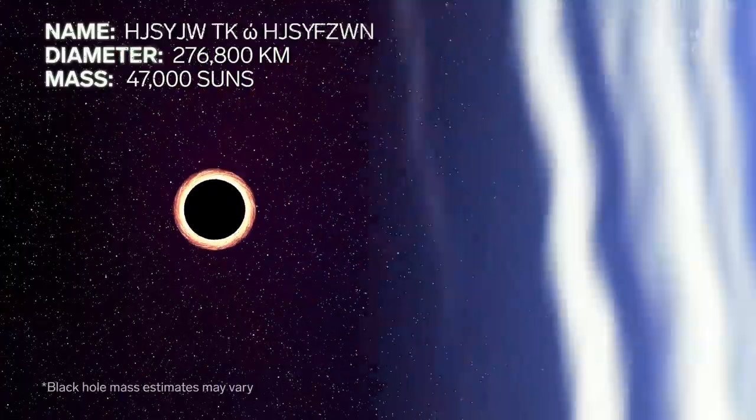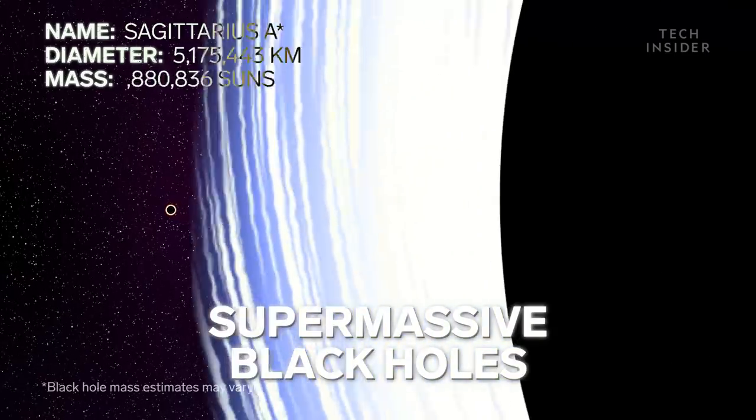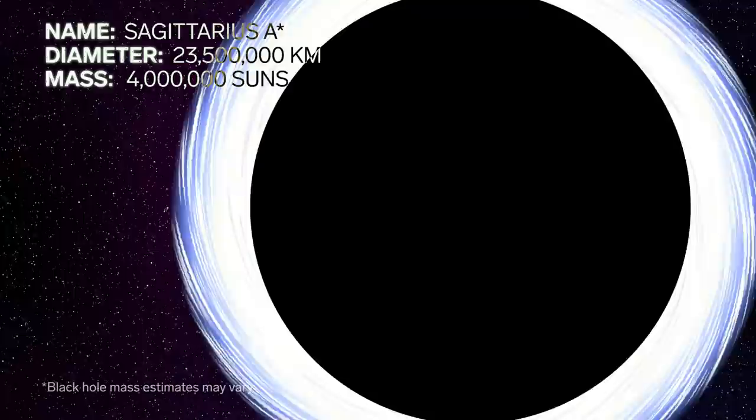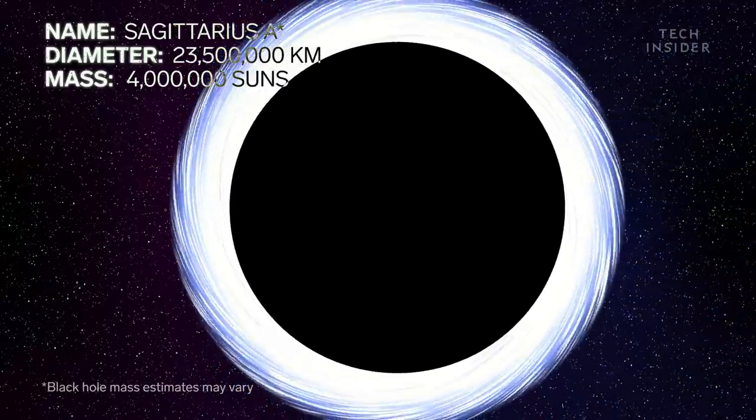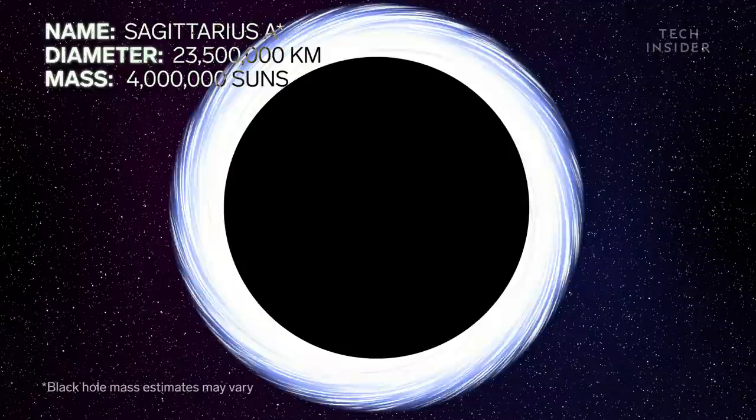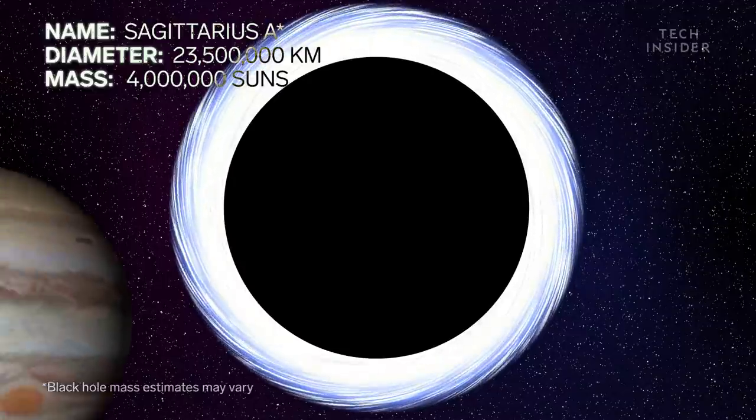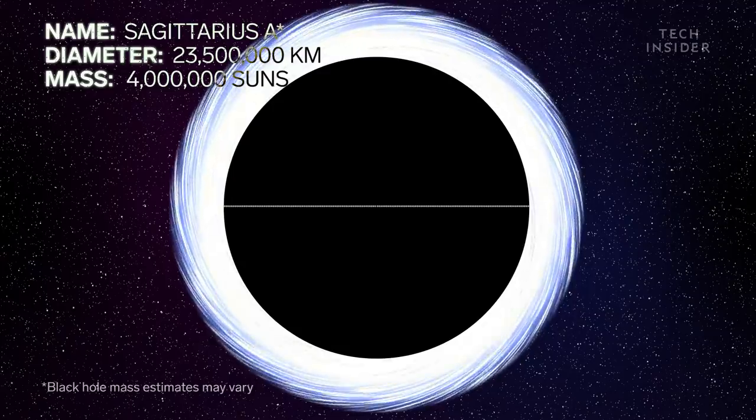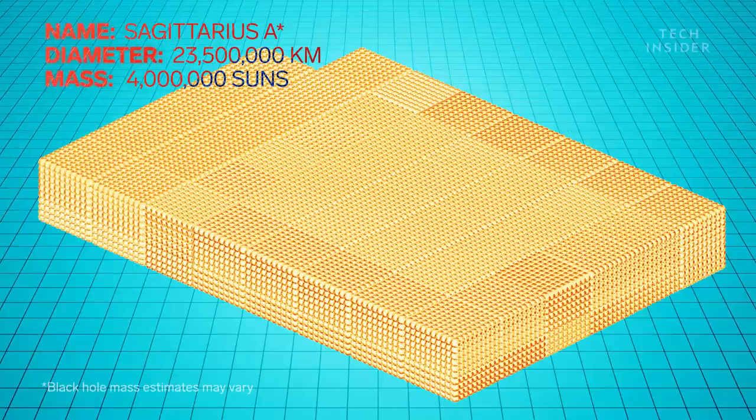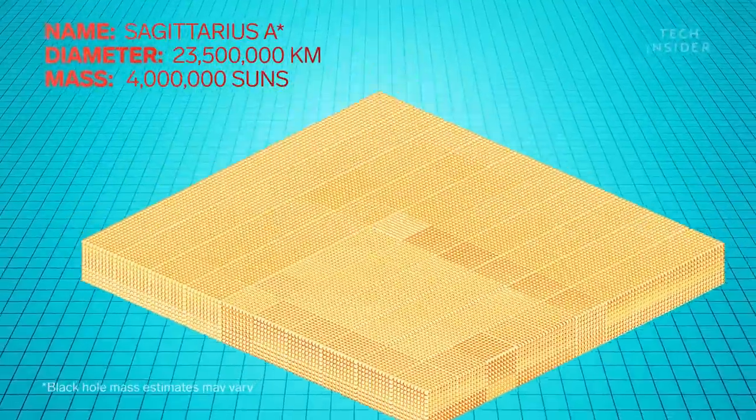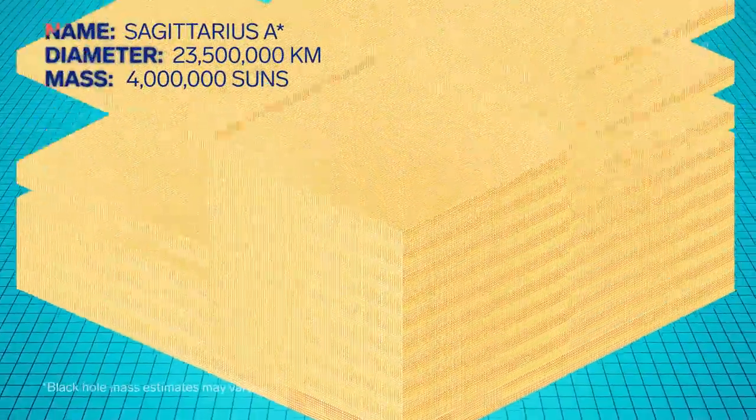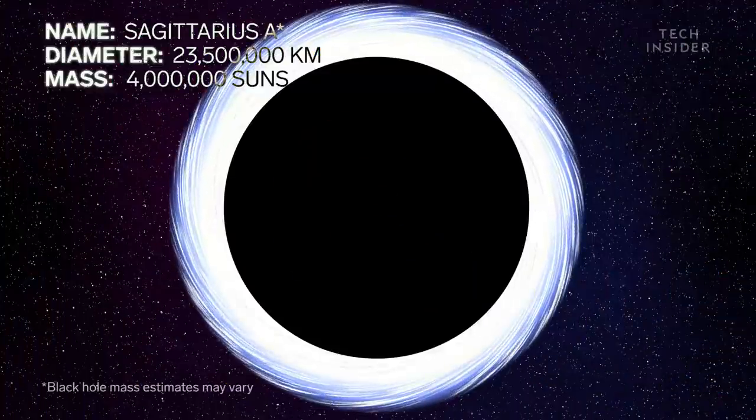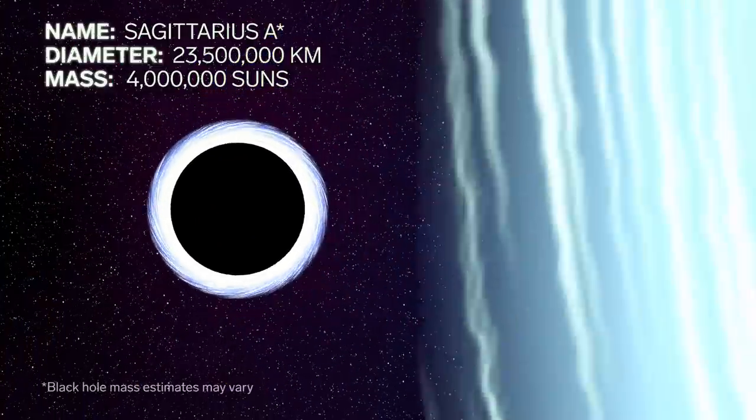But these black holes are nothing compared to supermassive black holes like Sagittarius A star, which lives at the center of our Milky Way galaxy. It covers a region about 14.6 million miles in diameter. That's roughly 168 Jupiters across. And inside is the same amount of mass as 4 million suns combined. Now that may sound big, but Sagittarius A star is small compared to other supermassive black holes.